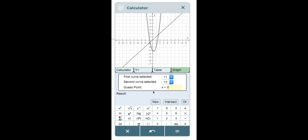Then we will select y1 for the first curve and y2 for the second curve. Finally, we will enter our guess point, which is the x-value that we estimate that the two graphs intersect at. For this problem, we'll use 1.5. Finally, we will hit this button labeled intersect.